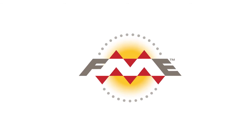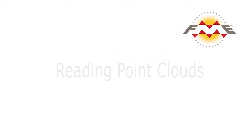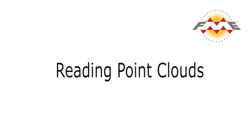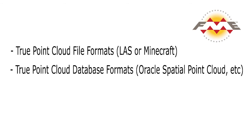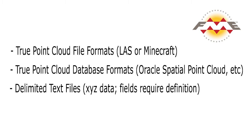This article discusses the three basic types of formats used to read point cloud data: true point cloud file formats, true point cloud database formats, and delimited text files. Further details on the first two types are discussed in the article.